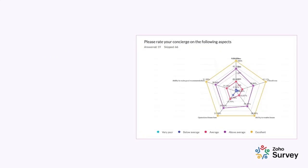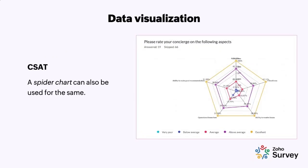This data can also be represented using a spider chart. Again, looking at ability to resolve issues: 38.89% rated it excellent, 44.4% above average, and 16.67% average. It's just another way of representing the same data — it boils down to individual preferences.